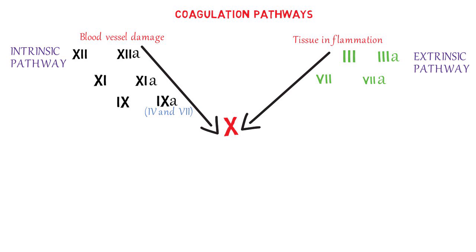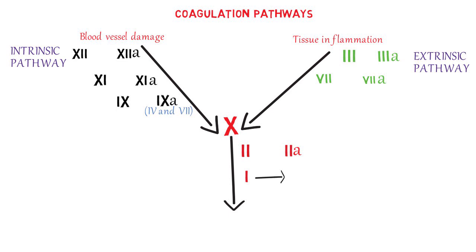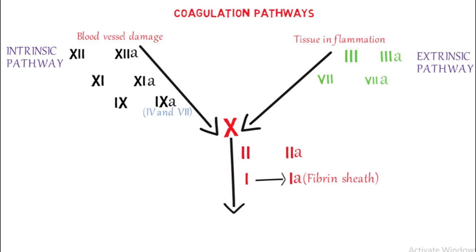Both the intrinsic and extrinsic pathways converge at the common pathway, which starts at the point where factor 10 has been activated. Factor 10 activates factor 2 (prothrombin), and factor 2 activates factor 1 (fibrinogen), converting it to its active form — fibrin. Fibrin sheets are the end product of the whole coagulation pathway. The fibrin sheet forms the clot, which totally stops the bleeding, establishing the goal of hemostasis.